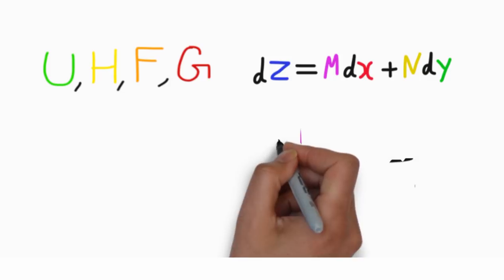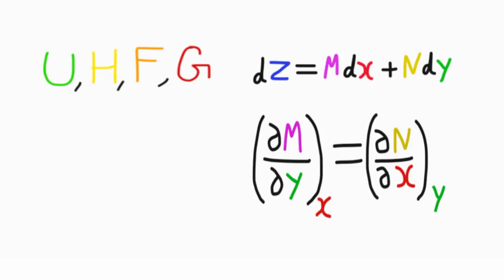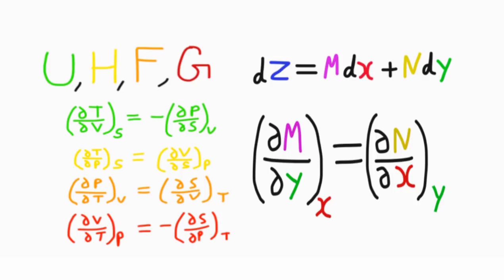These equations apply to the four thermodynamic properties and are exact differentials of the type dz equals mdx plus ndy, which can be represented as partial derivative of m with respect to y at constant x equals partial derivative of n with respect to x at constant y. Using this method on the four equations we get the Maxwell equations.